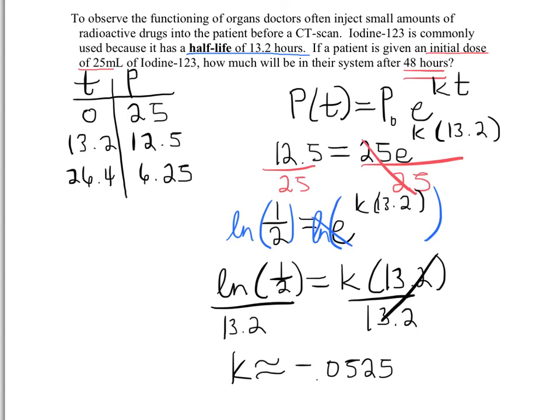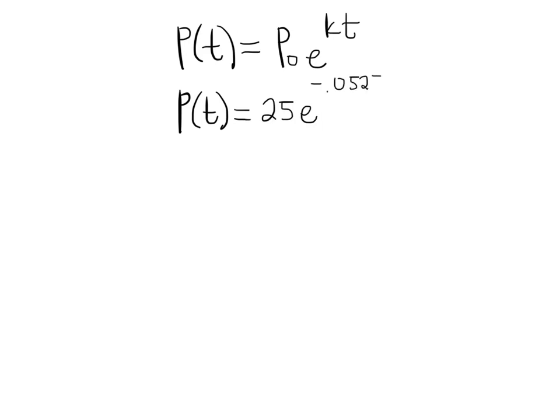Now we still haven't answered the question because we want to know how much will be in their system after 48 hours. We've got P(t) = P₀e^(kt). P(t), that's what we're actually trying to find this time. Our P₀, our initial population, is still 25. E to the K is what we just found, so that's -0.0525 times 48 because we wanted 48 hours. When you crunch this all in you end up getting about 2.01 milliliters.